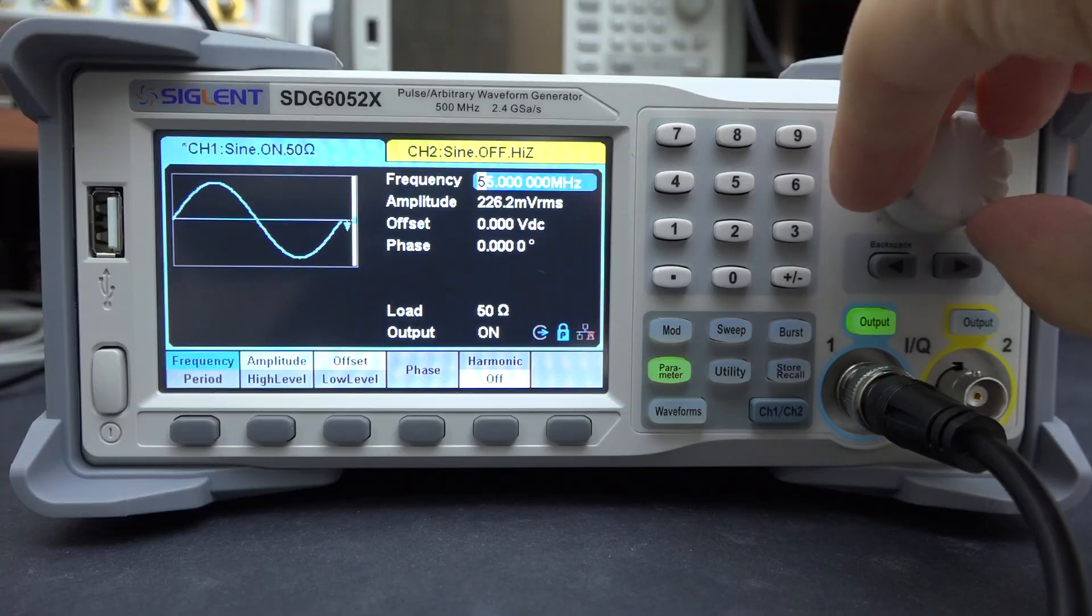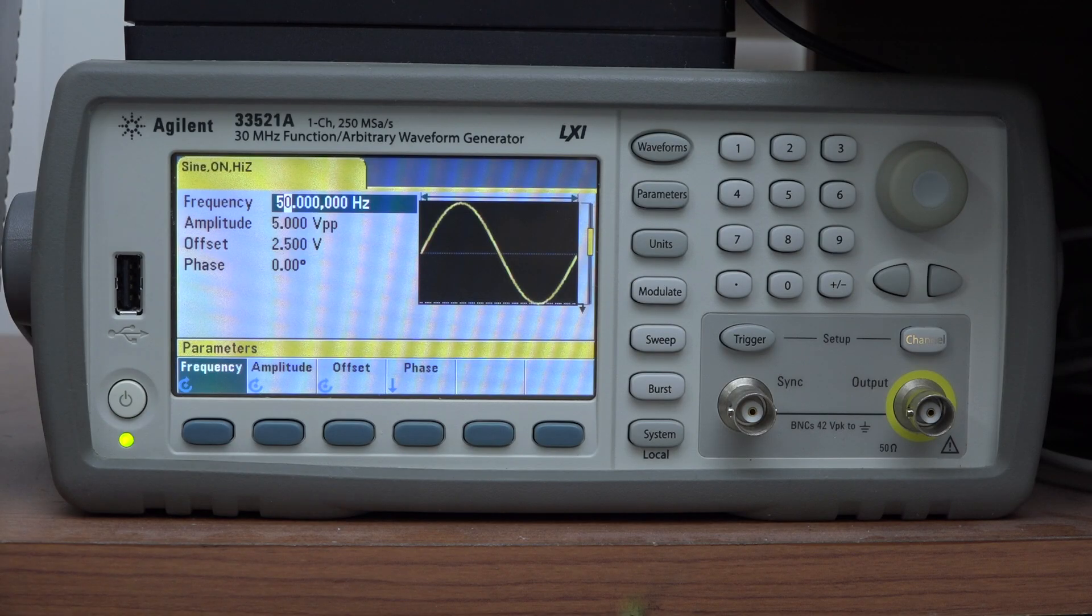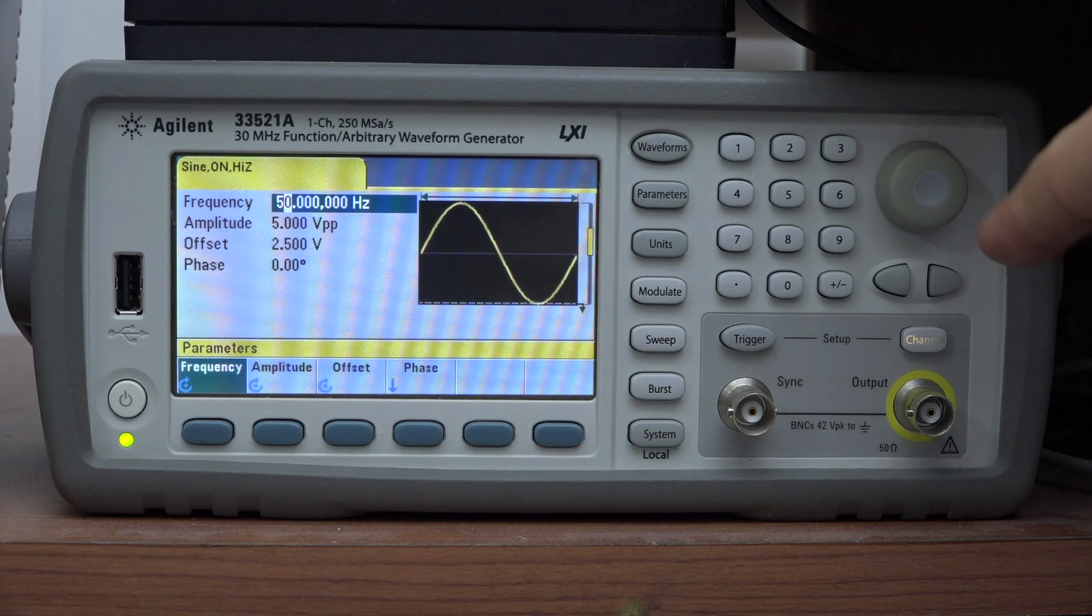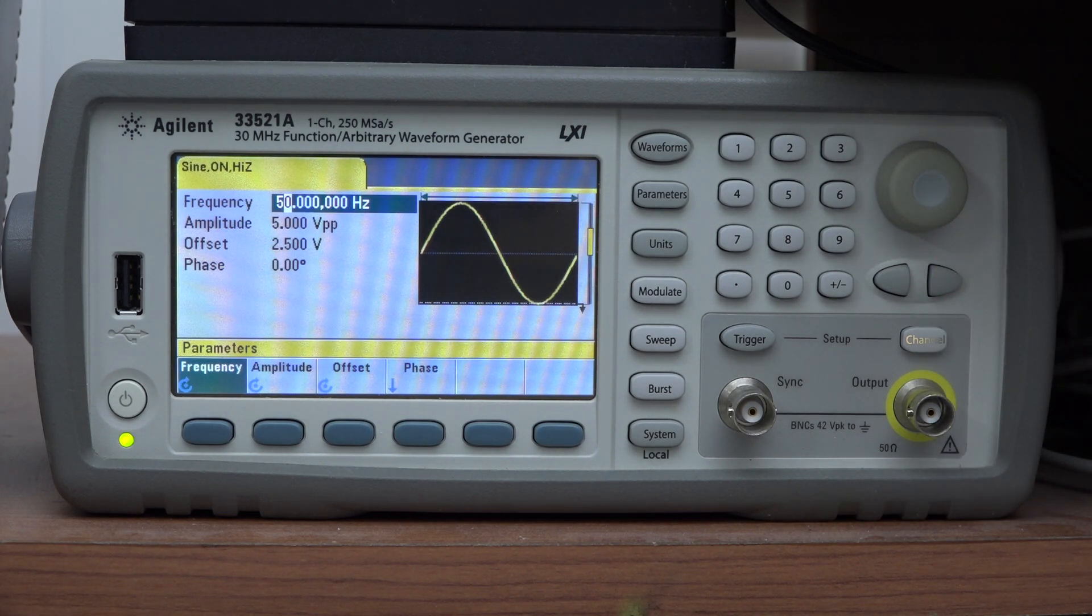I will say this though, I feel like Siglent copied a lot of ideas from Agilent slash Keysight. The layout of the controls and ports is very similar. I'm not sure how Keysight feels about this, but from a user's standpoint, this is a good thing because I always really liked my Agilent's interface.